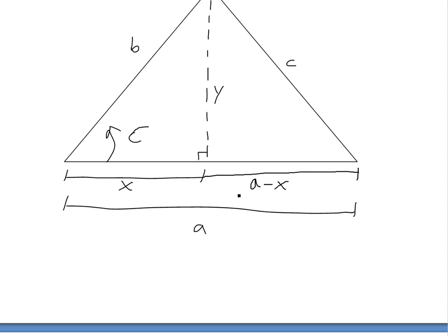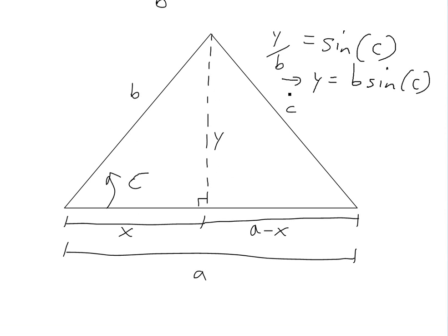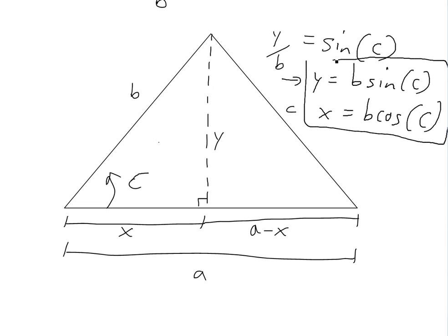This length from the foot of the perpendicular to the opposite vertex is just going to be A minus X. Now, Y over B equals sine C — that's just the definition of sine. If you rearrange it, Y equals B sine C. And similarly, X equals B cosine C. That's the definition: sine is opposite over hypotenuse, and cosine is adjacent over hypotenuse, so X over B.